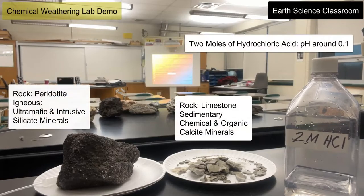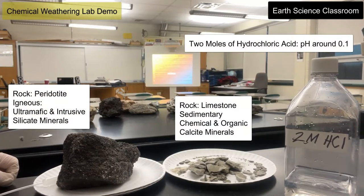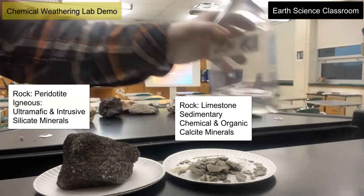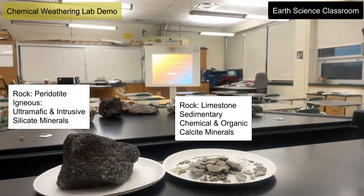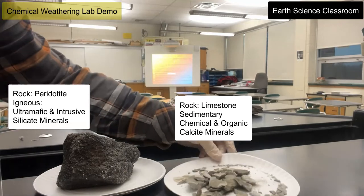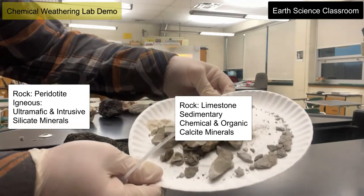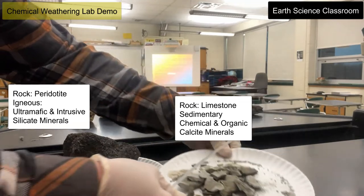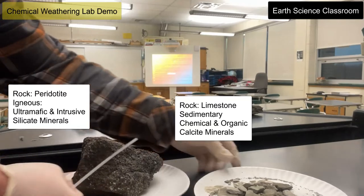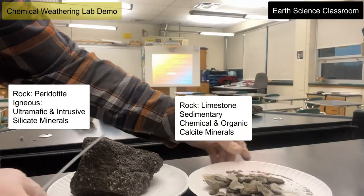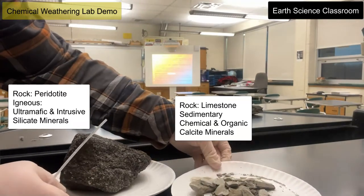This lab demo is going to demonstrate chemical weathering and the process of breaking down a rock using acids to chemically change the interior rock chemistry. I have here two moles of hydrochloric acid, very strong acid borrowed from the chem lab, and I have these limestone chips as my sedimentary rock, and here is my ultramafic igneous rock on the left as a comparison.